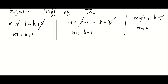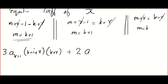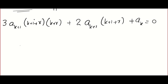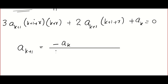Substituting these into the equation and collecting terms, we get the recurrence relation: 3a_(k+1)(k+1+r)(k+r) + 2a_(k+1)(k+1+r) + aₖ = 0, which gives the reduction formula: a_(k+1) = −aₖ / [(k+r+1)(3(k+r+2))].